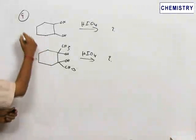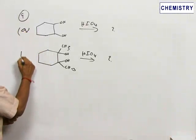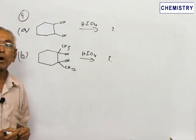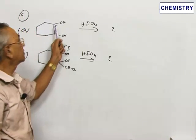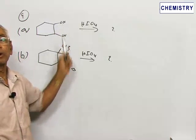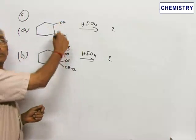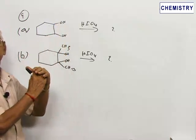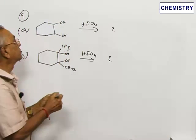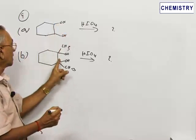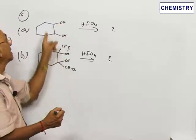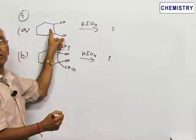These two questions, which can be marked as 9A and 9B, relate to the oxidative cleavage of vicinal diols or 1,2-diols. Two hydroxy groups are present in 1,2 or vicinal positions. Therefore, this is referred to as a vicinal diol. Similarly, this is also a vicinal diol, which is actually a 1,2-diol.